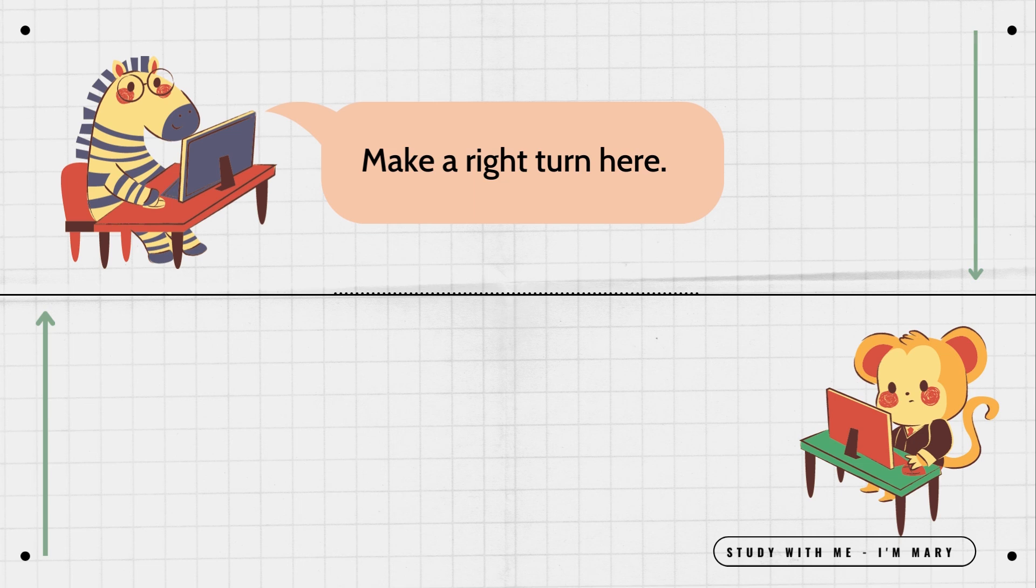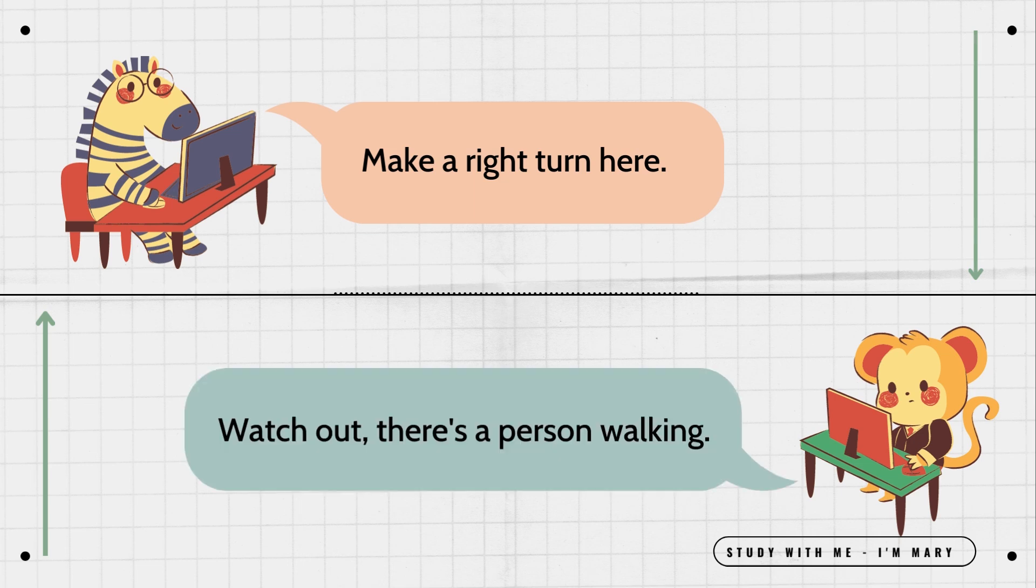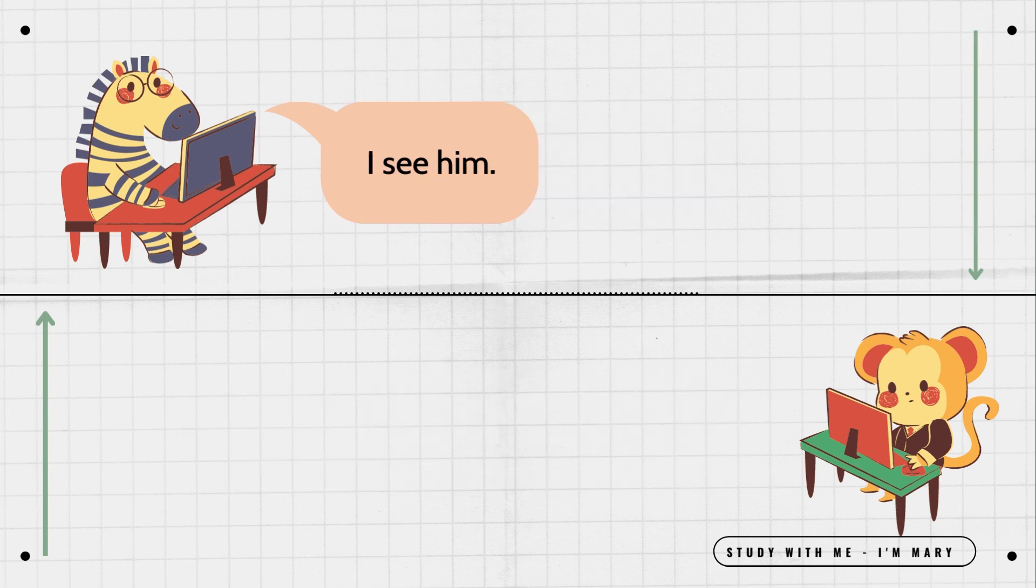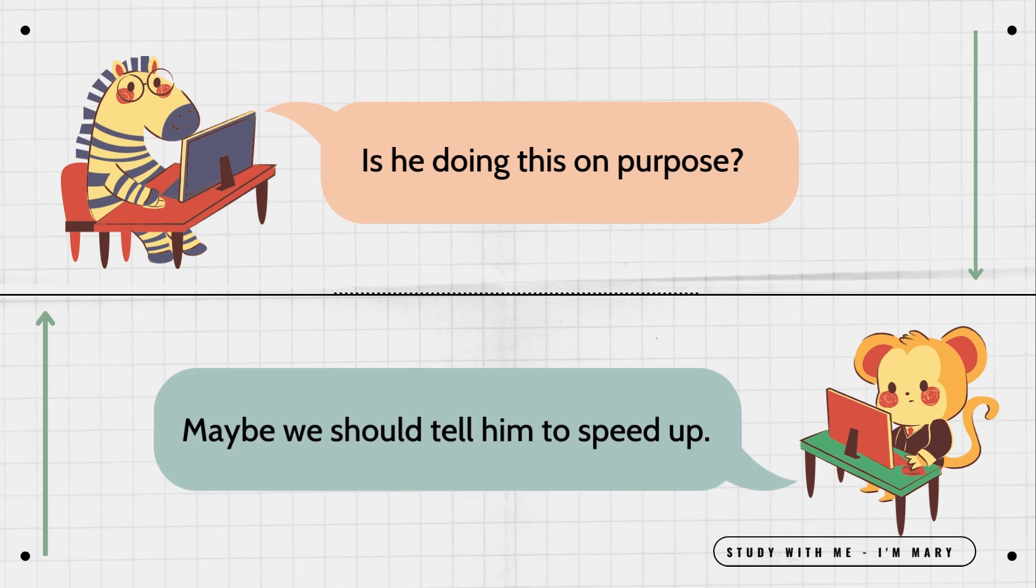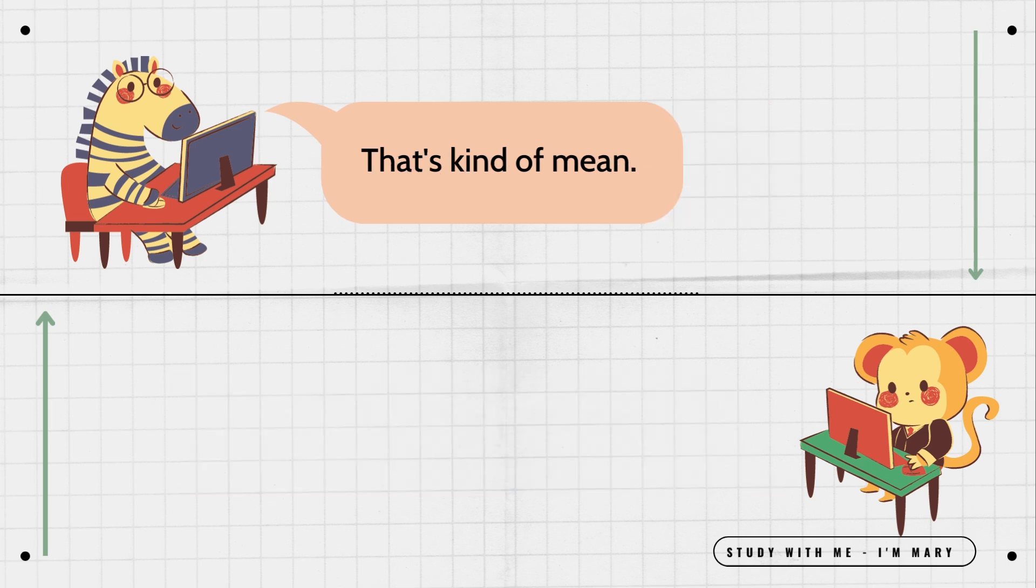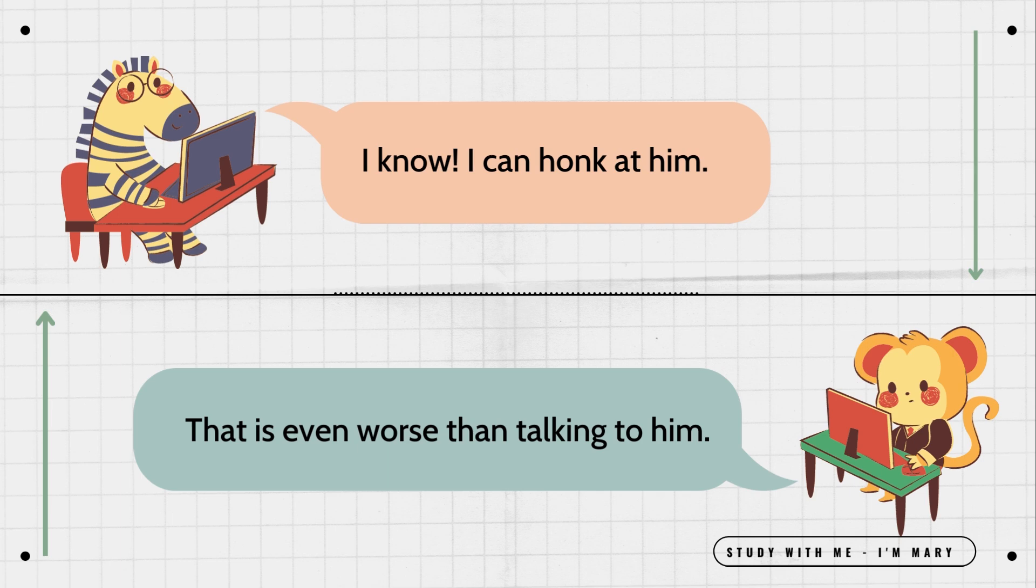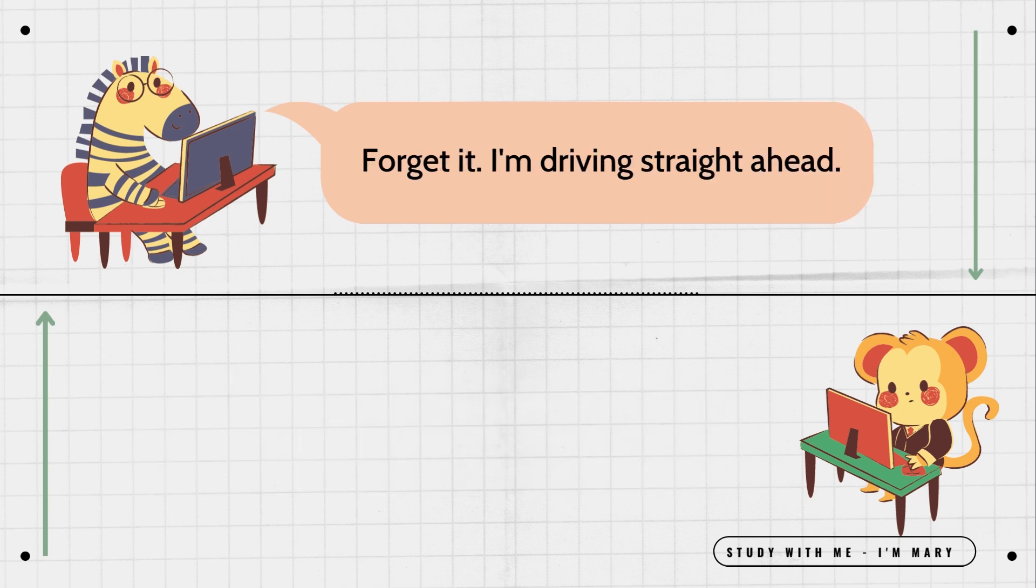Make a right turn here. Watch out, there's a person walking. I see him. He walks so slowly. Is he doing this on purpose? Maybe we should tell him to speed up. That's kind of mean. Then we'll wait.